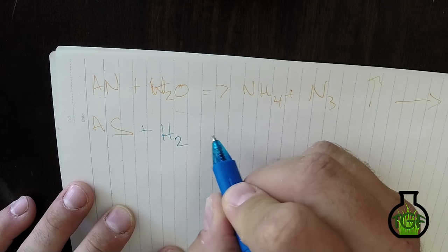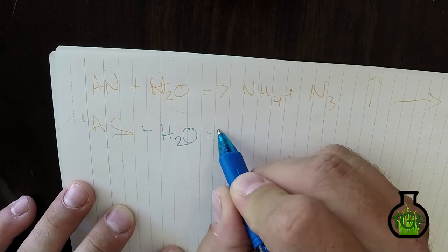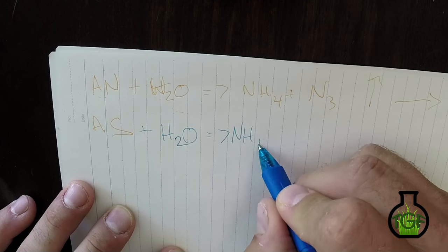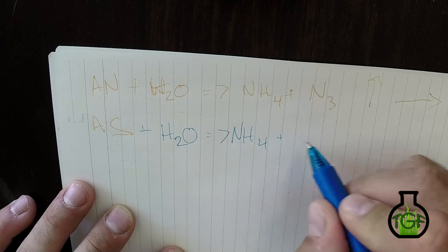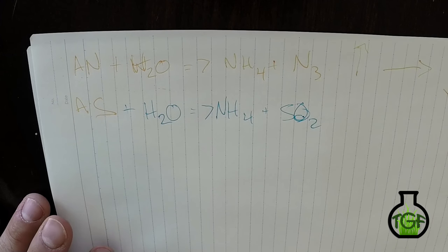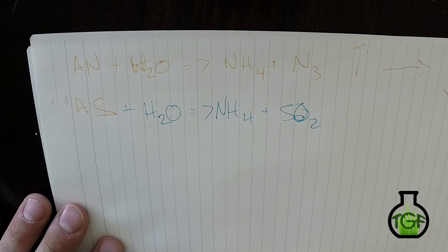When ammonium sulfate reacts with water, we're going to get NH4 and also SO4 sulfate. With that NH4, we get that immediate greening effect. The sulfur is going to be one of those not really talked about micronutrients. When you think micronutrients, you're going to think iron, calcium, magnesium, manganese, zinc, molybdenum.